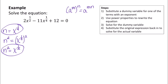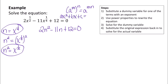I can rewrite the original equation as 2n squared — because x to the 1 half equals n squared — minus 11n, because n equals x to the 1 fourth, and then plus 12 equals 0. Now I have a quadratic equation in the form ax squared plus bx plus c equals 0, and that's something I know how to solve.